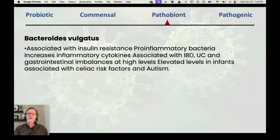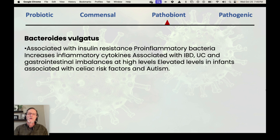Now I want to talk about a pathobiont called Bacteroides vulgatus, and show some before and after testing results. A definition from Ombre is that this bacteria is associated with insulin resistance, pro-inflammatory bacteria, increase in inflammatory cytokines associated with irritable bowel disease, ulcerative colitis, and gastrointestinal imbalances at high levels — with elevated levels in infants associated with celiac risk factors and autism. So it can have a negative impact, and the more you have, the greater the potential negative impact on the host.